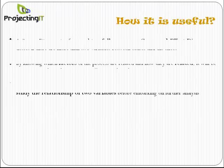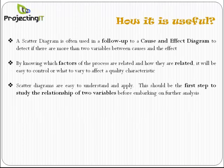To control variation in any process, it is absolutely necessary to understand which factors or causes are generating which effects. A cause and effect diagram can help to identify all probable causes.